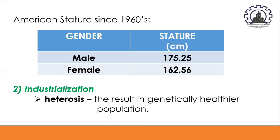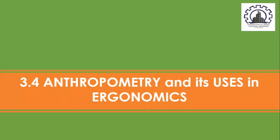The second factor influencing the change in body size is industrialization. As countries industrialized over the last few hundred years, previously isolated rural communities were scattered owing to improvements in transportation and urbanization. This resulted in outbreeding, or heterosis, thought to result in a genetically healthier population with hybrid vigor. The next key area is anthropometry and its uses in ergonomics.